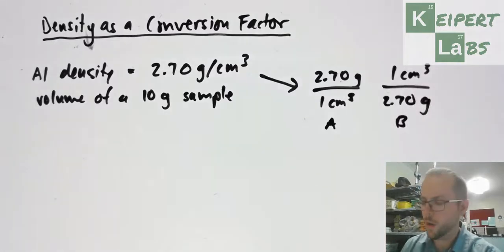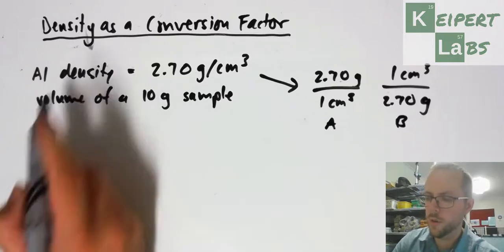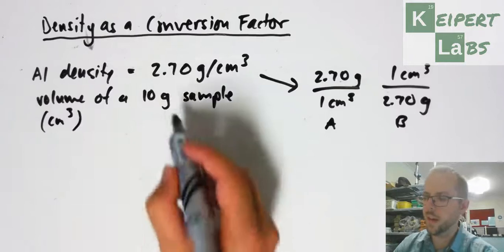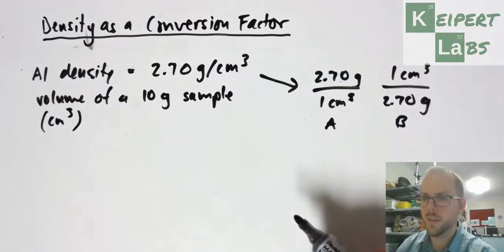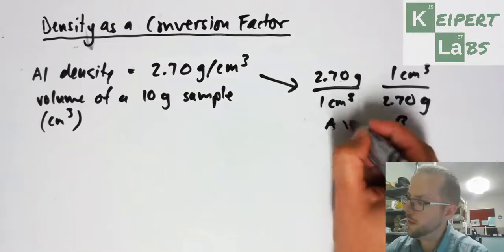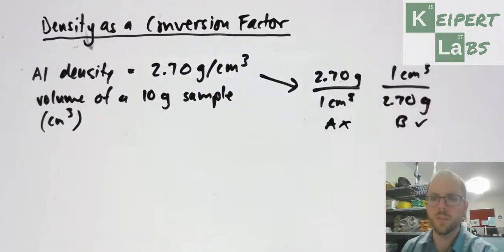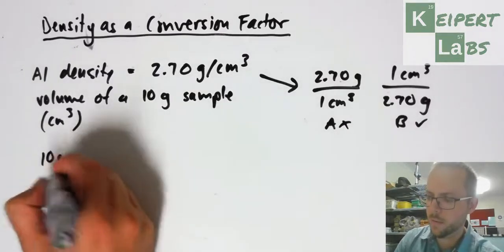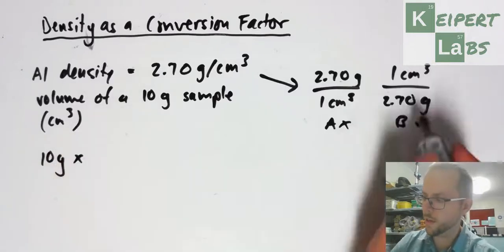I want units that I want over units that I have. The units I want are cubic centimeters, and the units I have are grams. Version A has grams over cubic centimeters - that's not going to help me. But version B will help me in this situation. I've got a 10 gram sample, and I multiply by my conversion factor B.